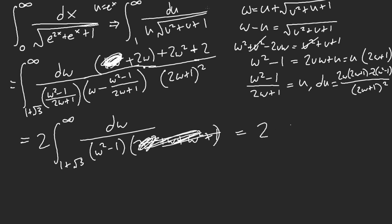So, this is 2 inverse tanh. A negative inverse tanh of w. Then infinity to 1 plus root 3. Plug in infinity. Technically equals to 0. Converges to 0, technically. So, what we have is negative. Well, positive to inverse tanh of 1 plus root 3.